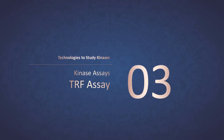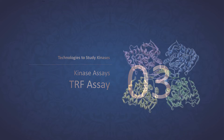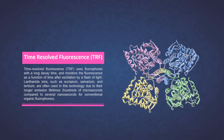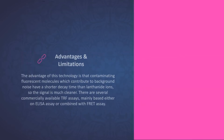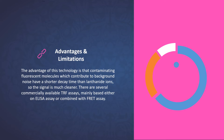Part 3: Time-resolved fluorescence uses fluorophores with a long decay time and monitors the fluorescence as a function of time after excitation by a flash of light. Lanthanide ions, such as europium, samarium, and terbium, are often used in this technology due to their longer emission lifetime — hundreds of microseconds compared to several nanoseconds for conventional organic fluorophores. The advantage of this technology is that contaminating fluorescent molecules, which contribute to background noise, have a shorter decay time than lanthanide ions, so the signal is much cleaner. There are several commercially available TRF assays, mainly based either on ELISA assay or combined with FRET assay.